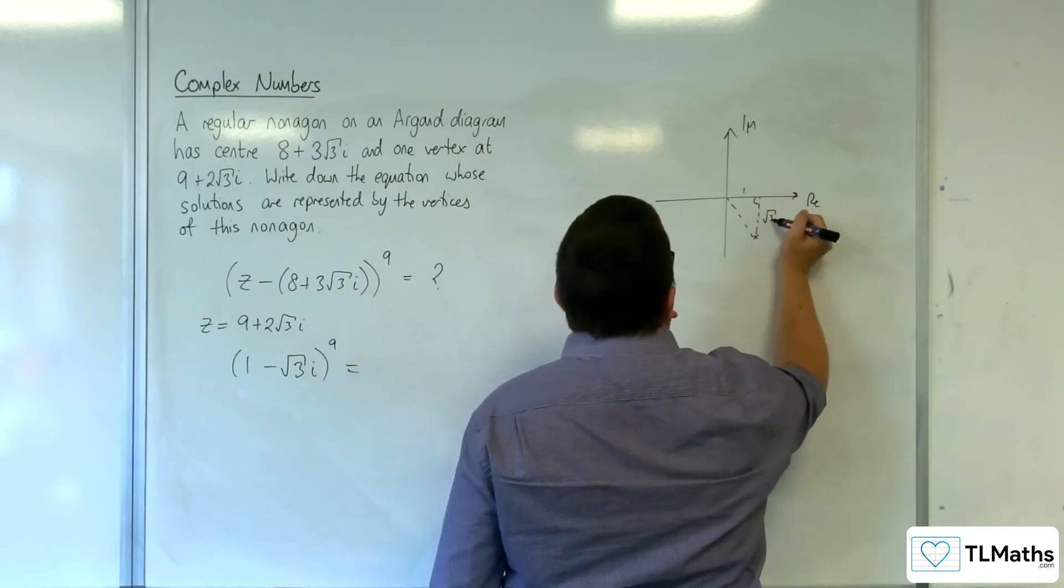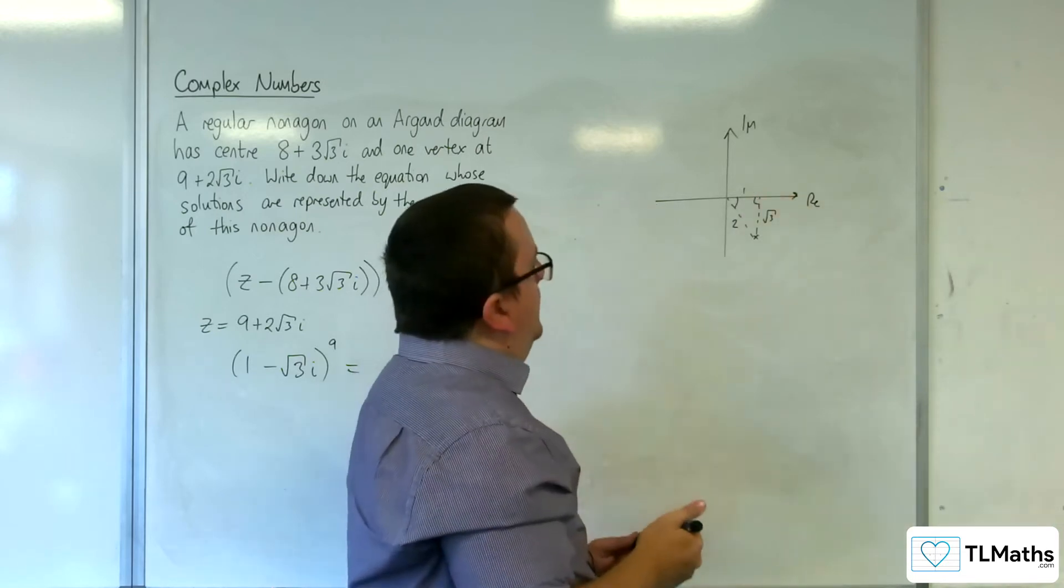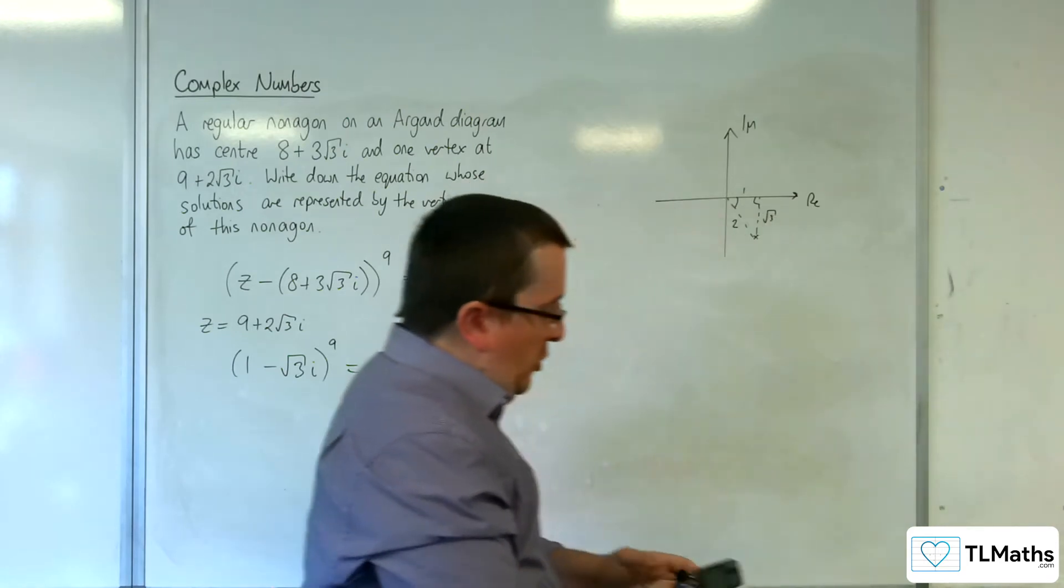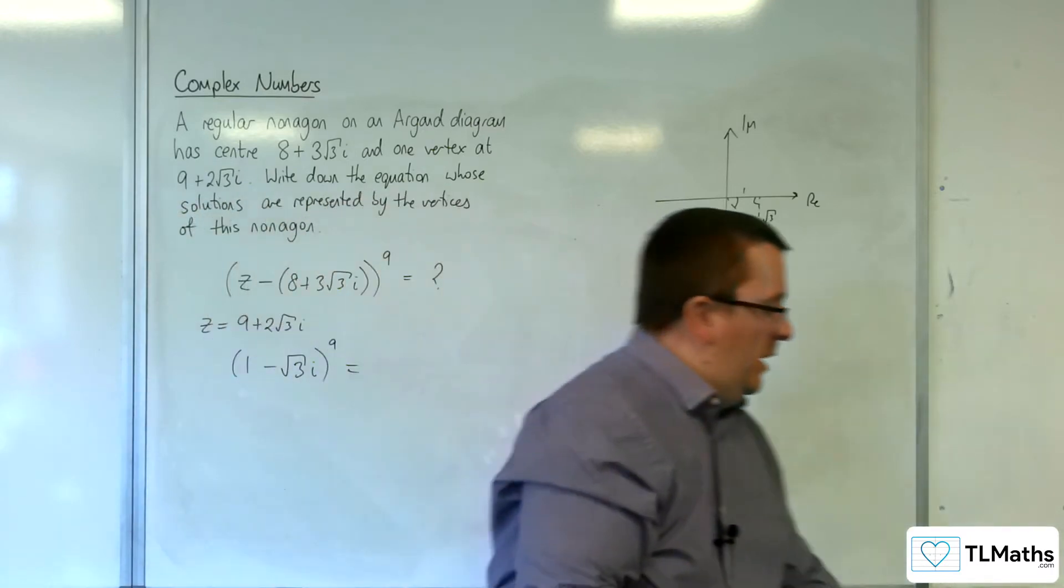So 1² + (√3)² is 4, so that's a 1, 2, √3 triangle. So we know the magnitude is 2, and inverse tan of √3 is π/3, so the argument is -π/3.